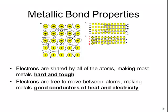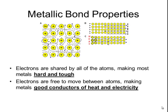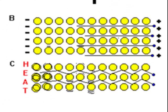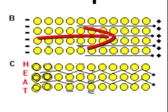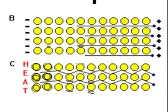Because electrons are free to move between each of the atoms, metals are excellent conductors of heat and electricity. If you apply an electric field, the electrons can easily shift from the negative terminal towards the positive terminal of that electric field. If you apply heat instead, you're adding kinetic energy to the atoms, causing them to move around. As the atoms begin to move, the electrons will also begin to move, and they can quickly move through that sea of electrons.